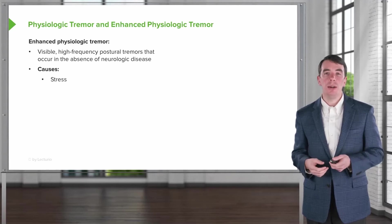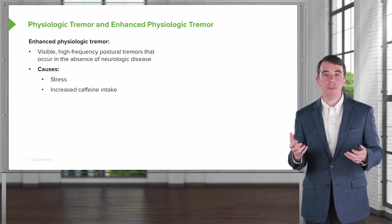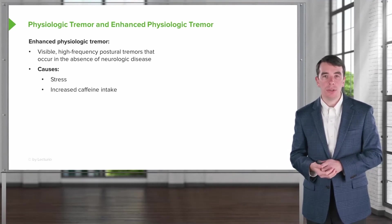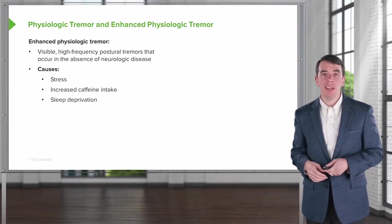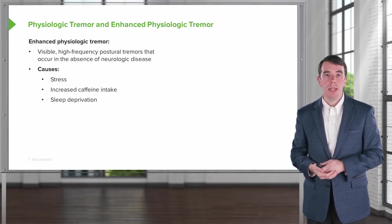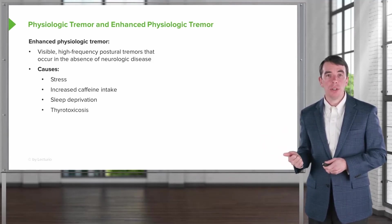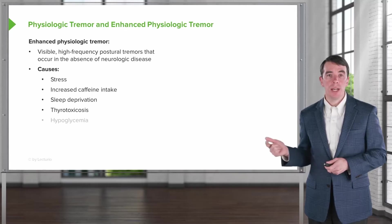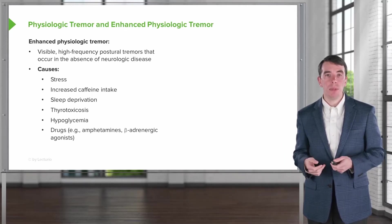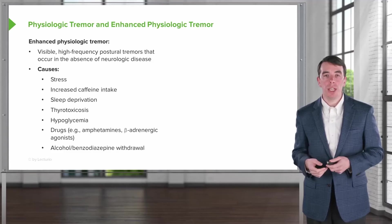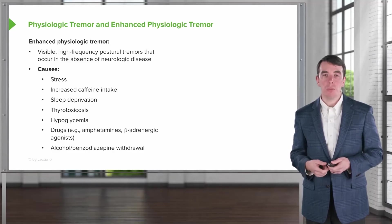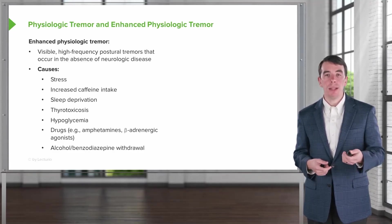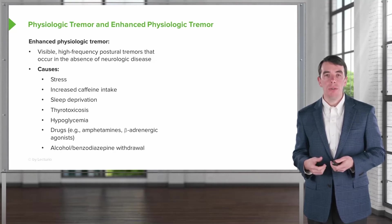Causes of enhanced physiologic tremor include stress, increased caffeine intake, sleep deprivation, thyrotoxicosis, hypoglycemia, certain drugs like amphetamines, and withdrawal from alcohol or benzodiazepines. Enhanced physiologic tremor is not a serious problem — it doesn't require evaluation and typically doesn't require treatment unless it interferes with activities of daily living.